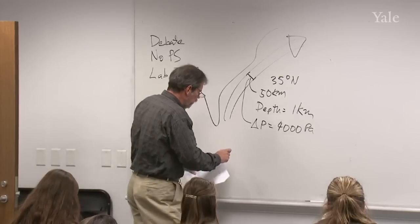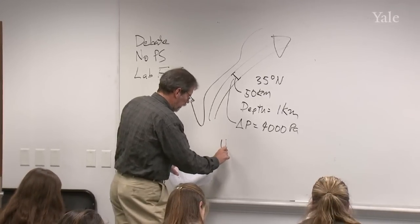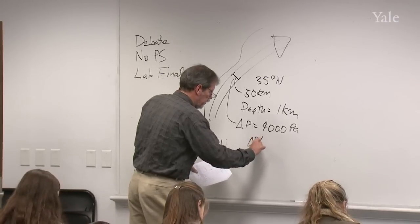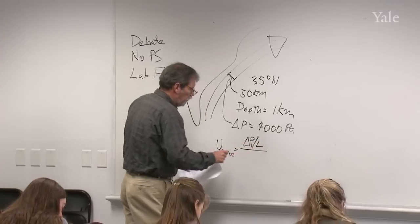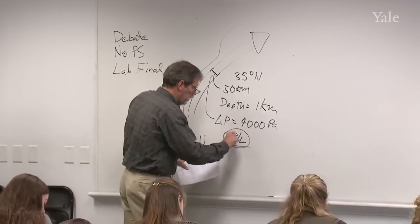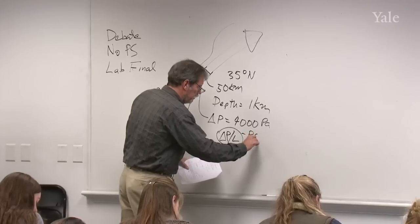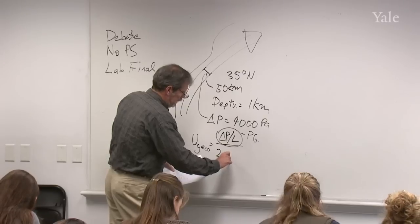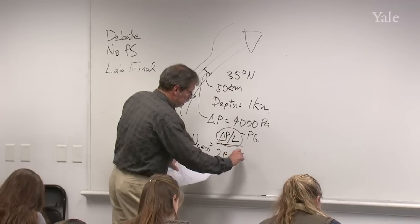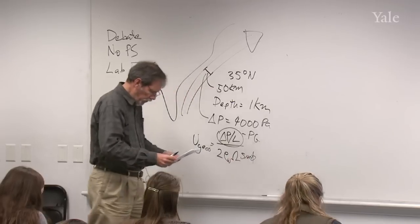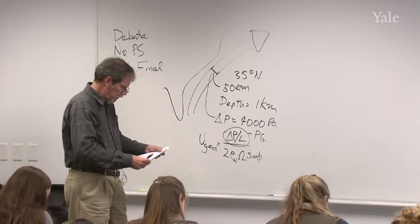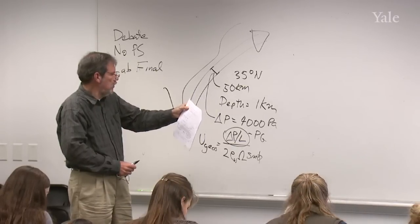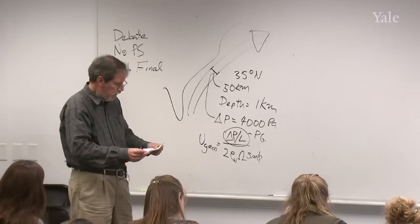The way I did it was first to use the formula for geostrophic speed, which is the pressure difference divided by the length over which the pressure changes. That's the so-called pressure gradient. And then down below goes 2, the density of water, times the rotation rate of the Earth, times the sine of the latitude. That formula is given to you at the top of the second page.